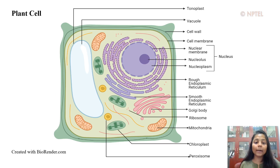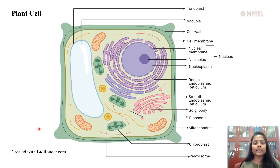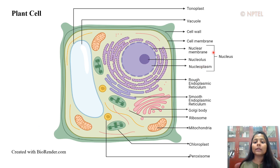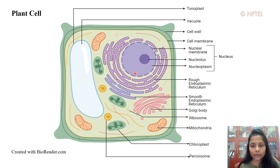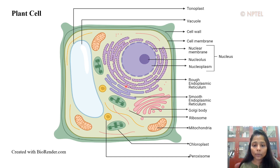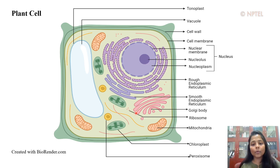Plants are multicellular organisms composed of millions of cells with specialized functions, but all these cells have a common eukaryotic organization. For example, they contain a nucleus with a typical porous nuclear membrane, nucleolus, nucleoplasm, and the genetic material. They also contain cytoplasm with different membrane-bound subcellular organelles like the endoplasmic reticulum, Golgi body, mitochondria, ribosomes, and so on.